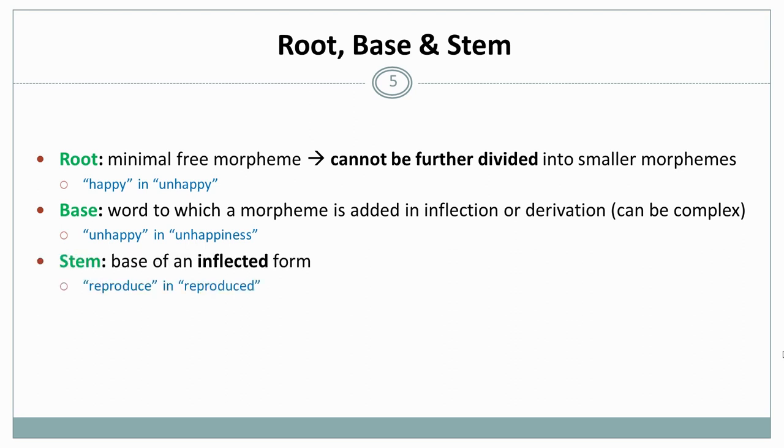And then we have stems. Stems are the basis of inflective forms only. So reproduce in reproduced, for example, would be the stem. It is also a base. So this means that every root can be a base, every stem is a base, but not every base is a root or a stem.